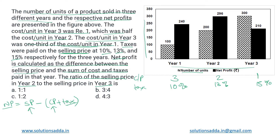In year one, there are 100 units sold and the cost per unit is 3 rupees, so the cost price for 100 units is 300 rupees. In year two, it will be 200 units times 2 rupees, giving 400 rupees. In year three, it is 300 units times 1 rupee, giving 300 rupees. So we now have the cost price for all three years.